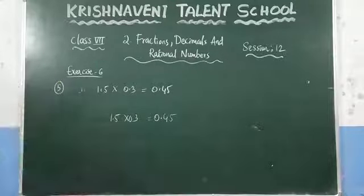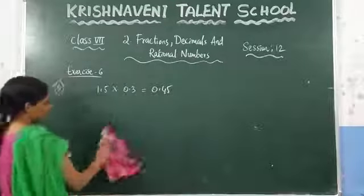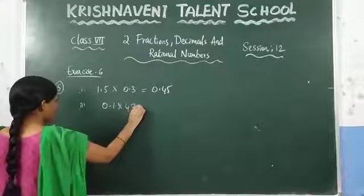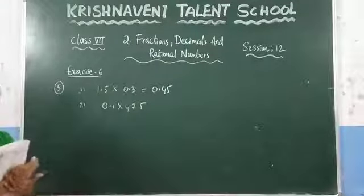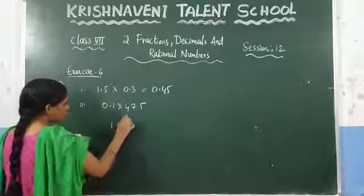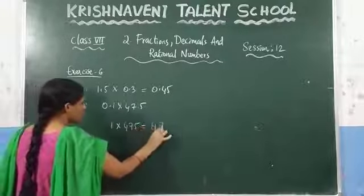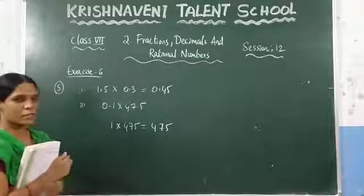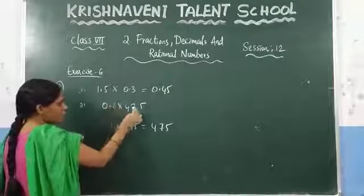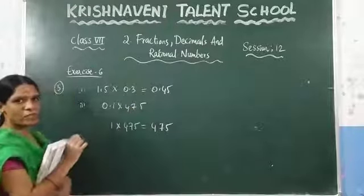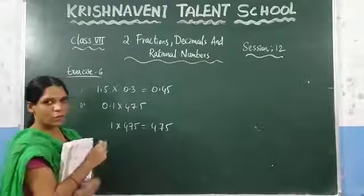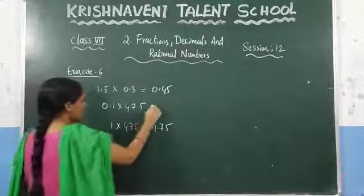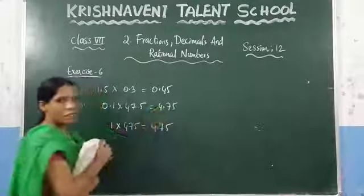Now see the second question: 0.1 into 47.1. Same method — leave the decimal point. What are the numbers? Here 1 and here 471. So 1 into 471 gives you 471. Now count after the decimal point: here 1 number and here 1 number, so 2 numbers total. Starting from the right, count 2 numbers and before that keep the decimal point. So the value is 4.71.